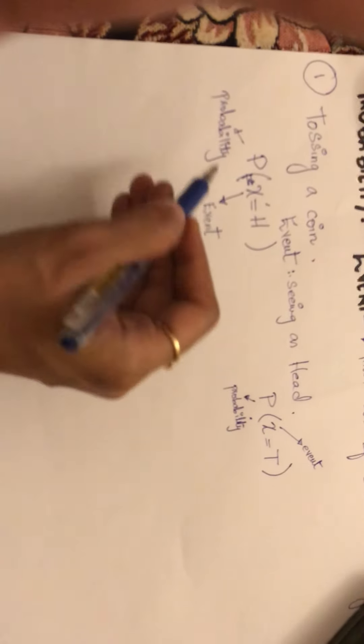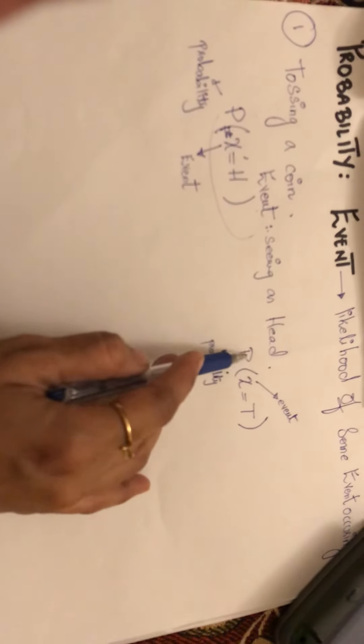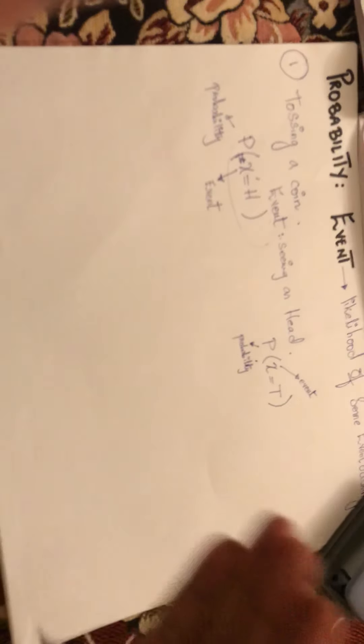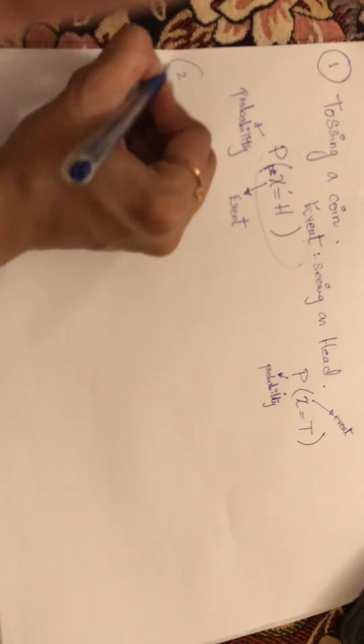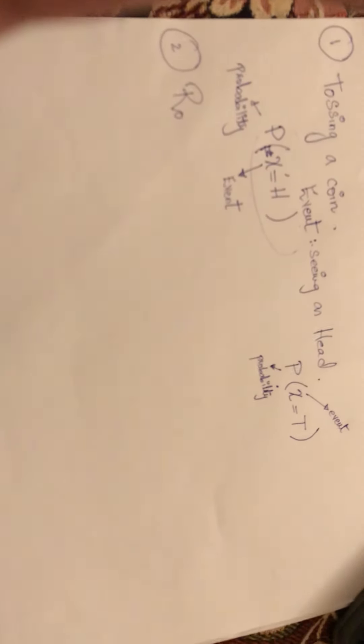Now this is how we write an event. Secondly, if the event is you are seeing a tail, P is the probability. We'll discuss probability and how we write it later, but I'm just discussing events right now. I just don't want to shower everything upon you, so we're doing everything step by step. Bracket open, X signifies the event, equals T. The event is tail. I hope I'm clear.